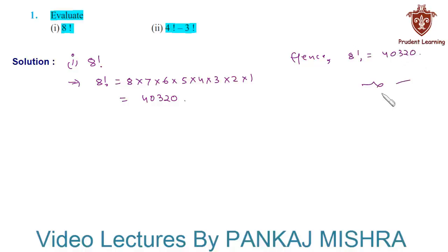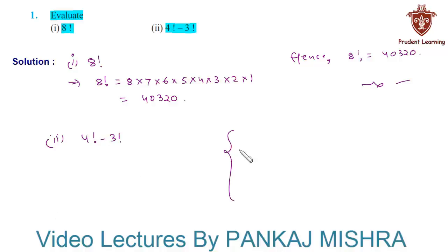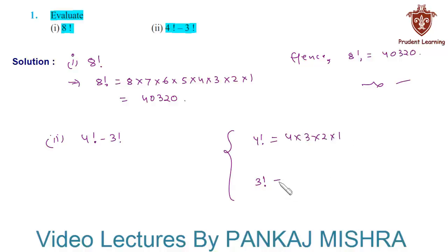This completes our solution. In the second section we have to find the value of 4 factorial minus 3 factorial. First let us find the values of 4! and 3! separately. We know that 4! can be written as 4 × 3 × 2 × 1, and 3! can be written as 3 × 2 × 1.